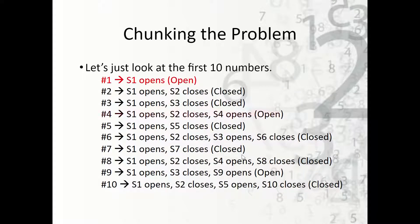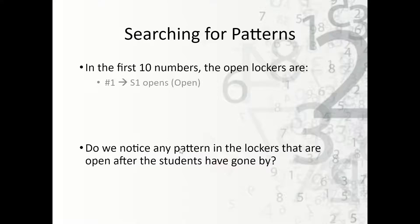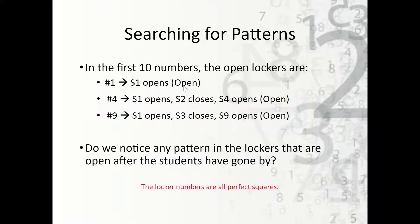Looking at the results, the lockers that are open at the end are lockers 1, 4, and 9. All the closed ones have an even number of factors — to open and close enough times, you need an even number of factors to end up closed. The open ones have an odd number of factors. The only way to get an odd number of factors is to be a perfect square, because a factor multiplied by itself isn't duplicated — for example, 9 has factors 1×9 and 3×3, giving an odd count. So the open lockers are the perfect squares.